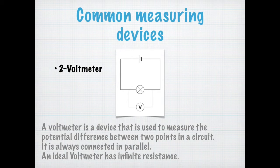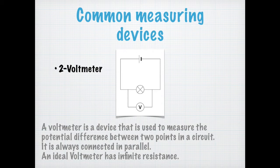So we can have the right potential difference readings. That is basically why the voltmeter needs to be connected in parallel with the resistor. To summarize: a voltmeter is used to measure potential difference; it is connected in parallel at all times; and an ideal voltmeter has infinite resistance.